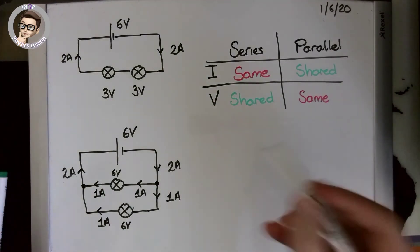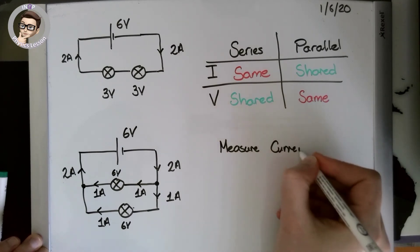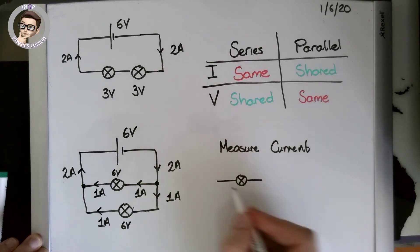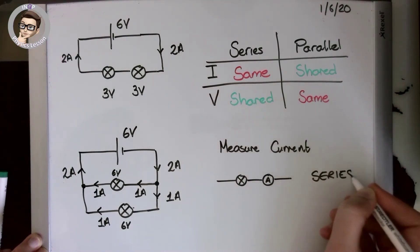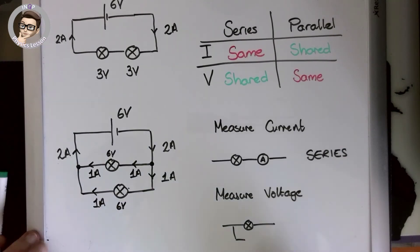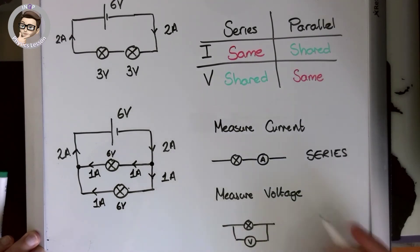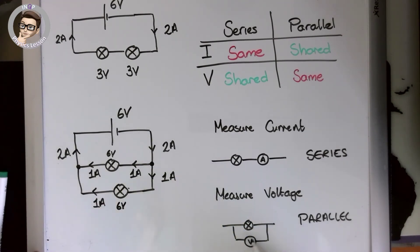If we want to measure current, we use an ammeter connected in series, because all the current flows into and out of the component. If we want to measure voltage, we connect the voltmeter in parallel. We want to measure the complete voltage at that point, and it's important that very little current flows through the voltmeter — otherwise it would affect the value you're measuring.